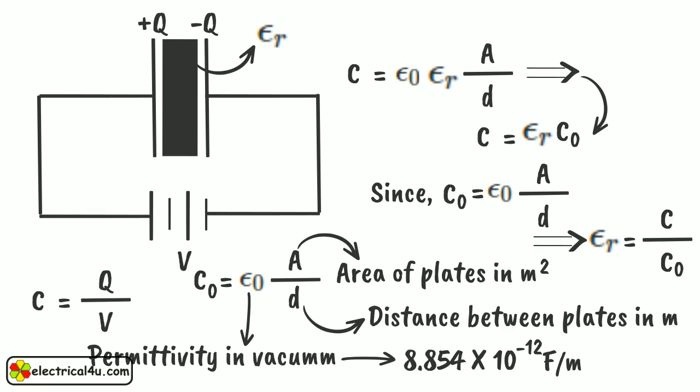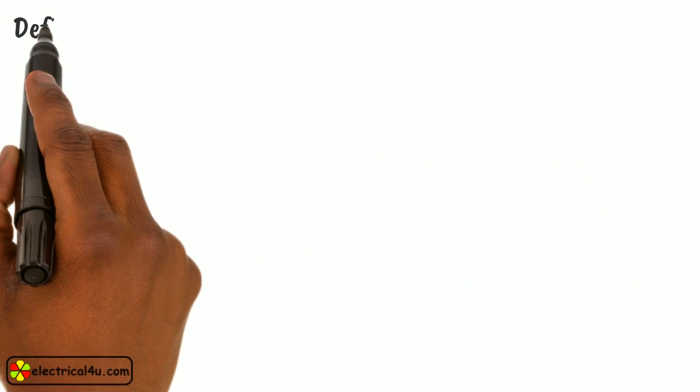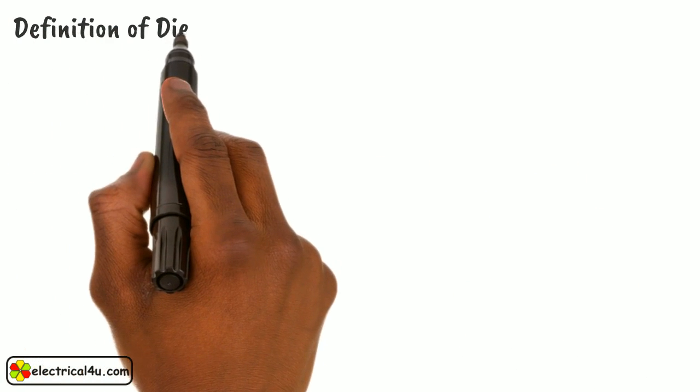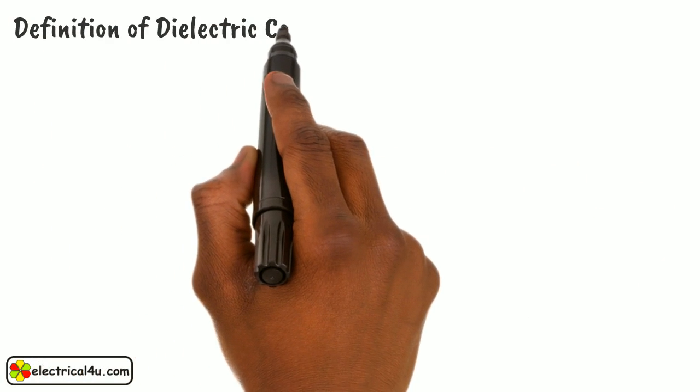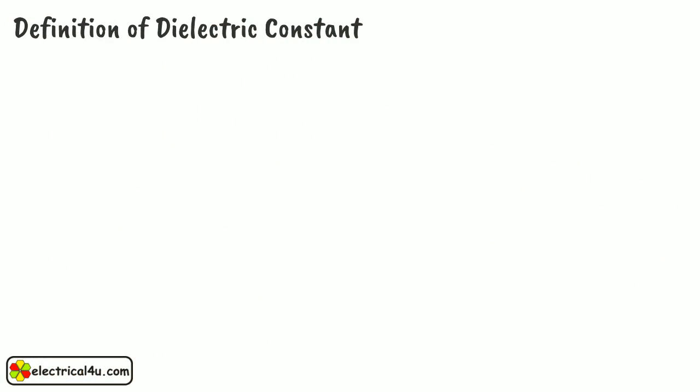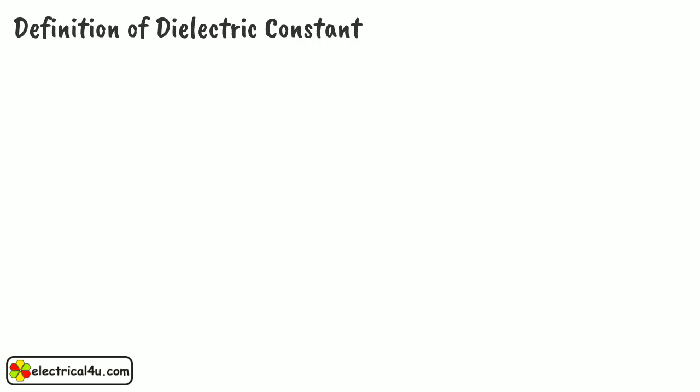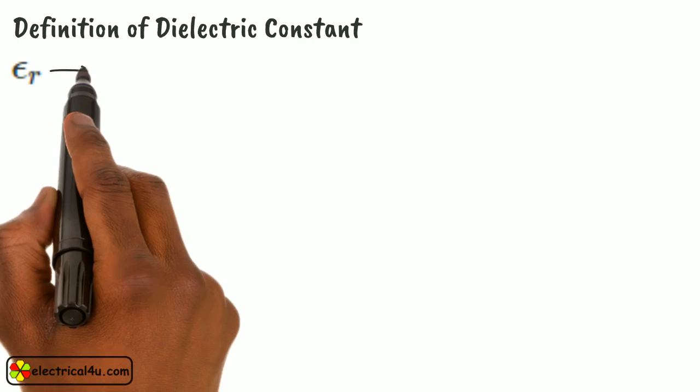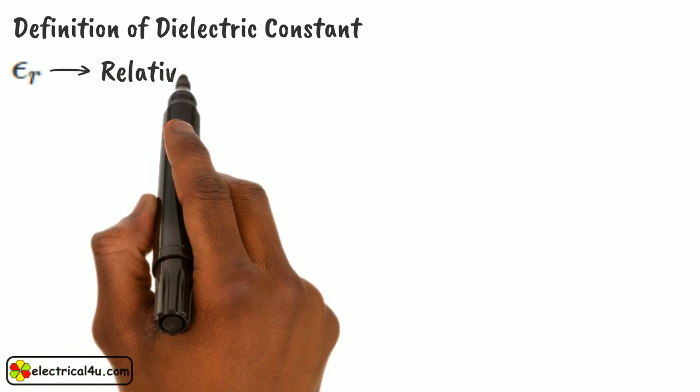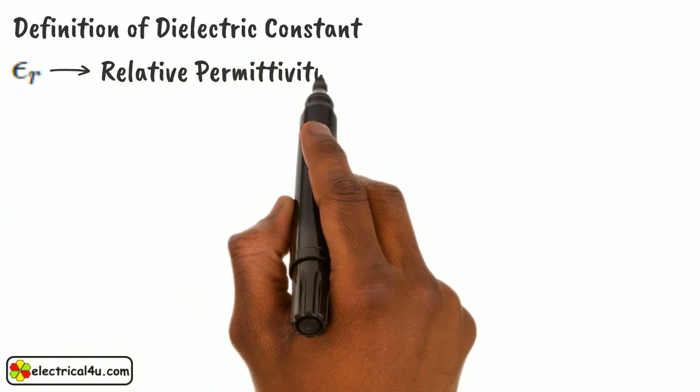Then epsilon_r can be determined from the relation epsilon_r equals to C by C_0. The dielectric constant of a material is defined as the ratio of capacitance of a capacitor with material as a dielectric to the capacitance of the same capacitor with vacuum or free space as dielectric medium. This is a dimensionless quantity called relative permittivity of a dielectric material.